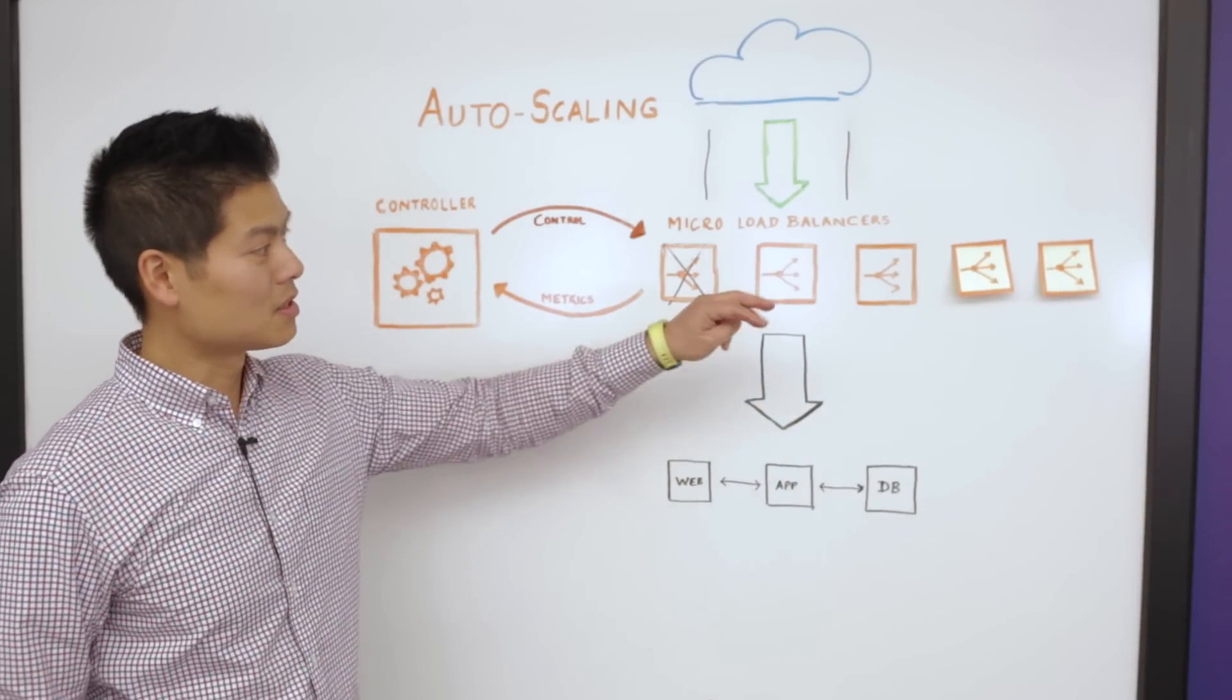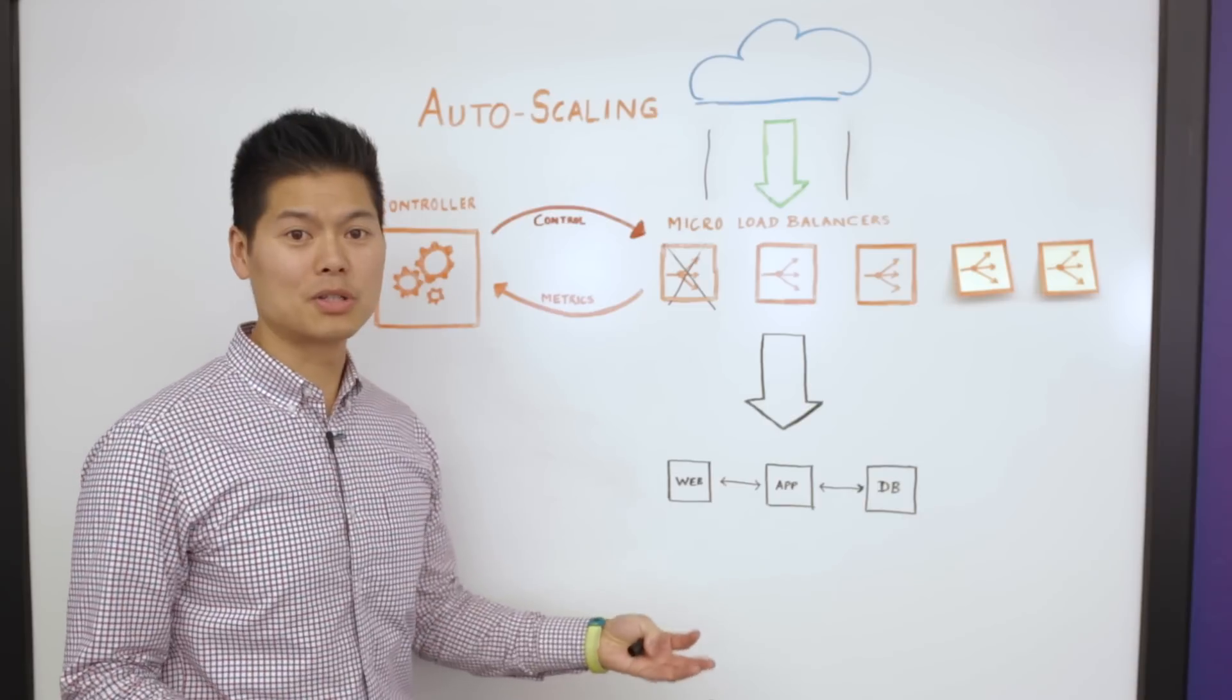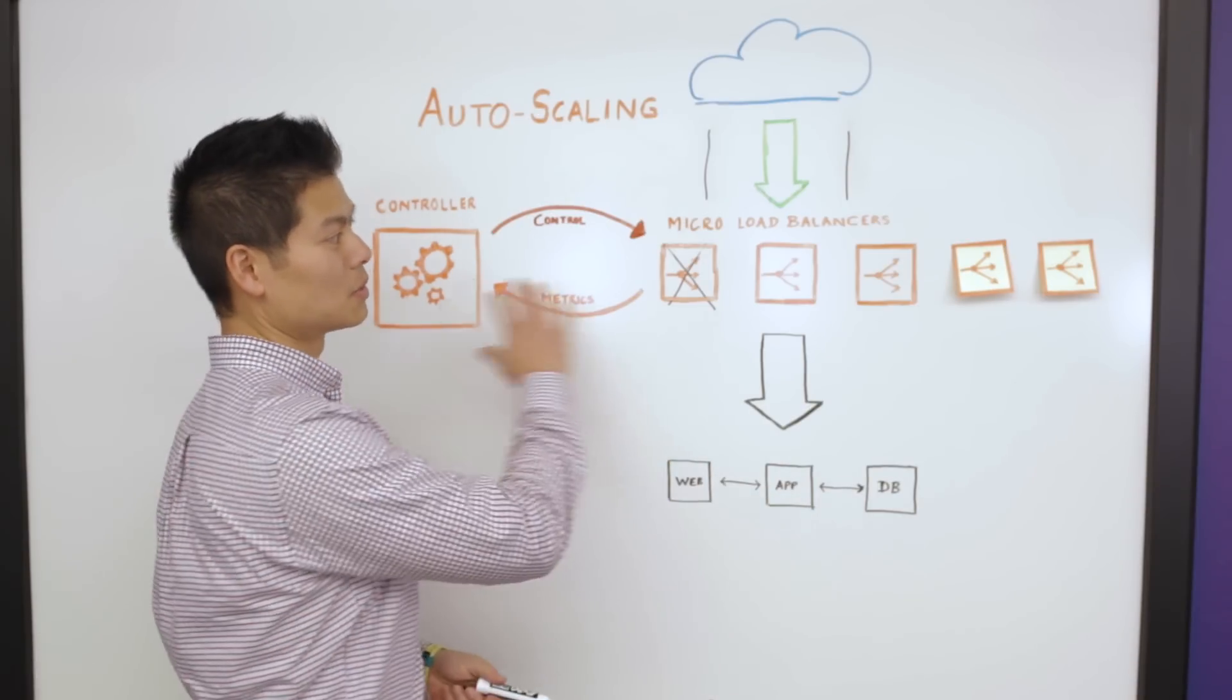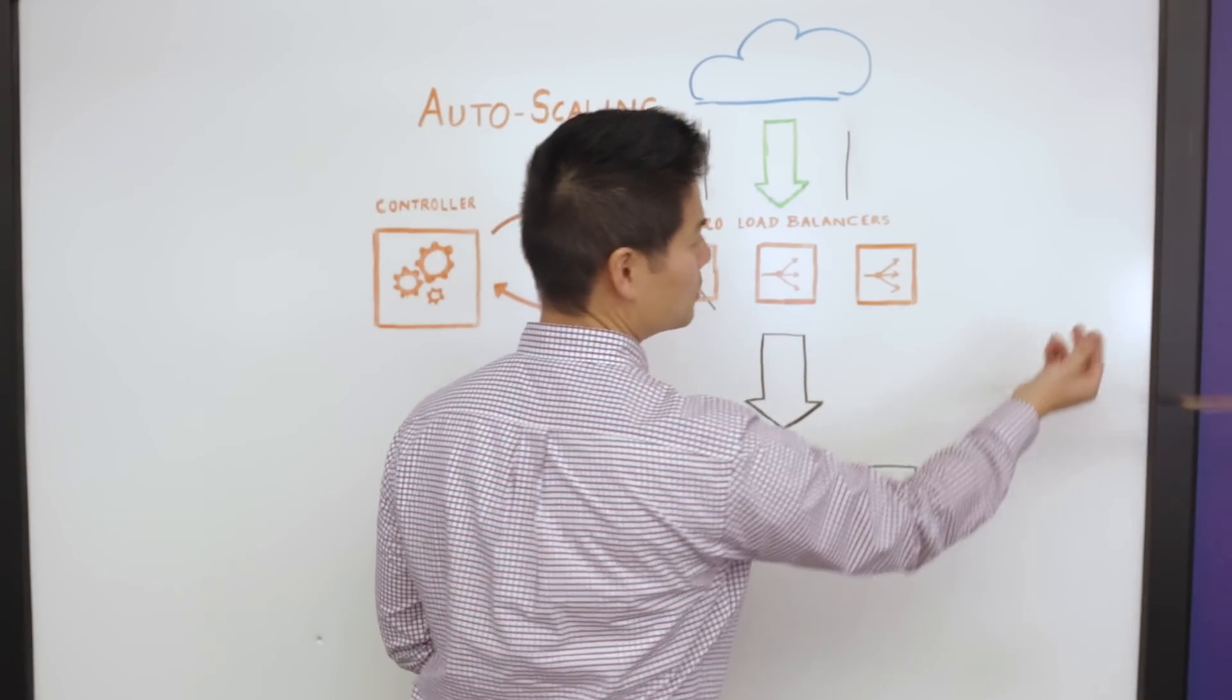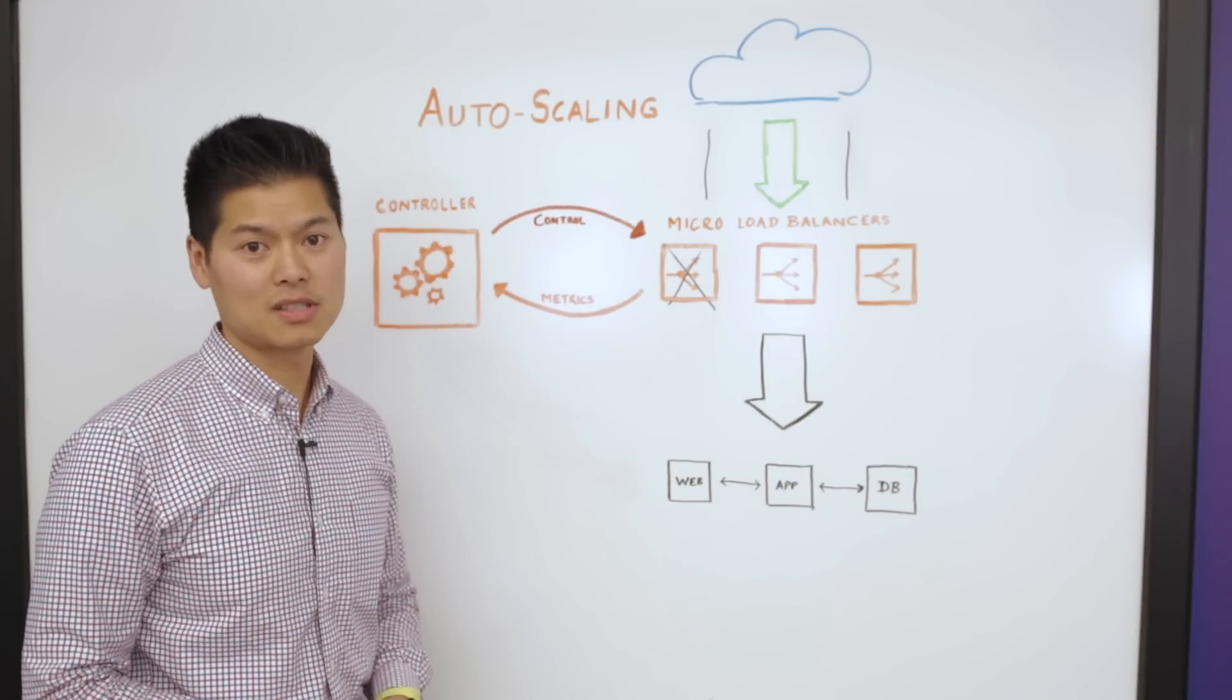At this point, the weekend is over, the traffic drops. With a hardware-based approach, that hardware would sit idle for the rest of the year. With this software-based approach, it's very easy to spin these guys down, and now you free up your x86 resources in your data center.